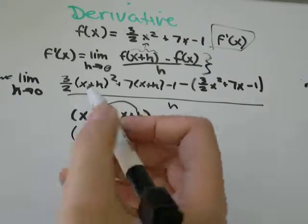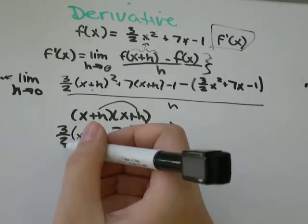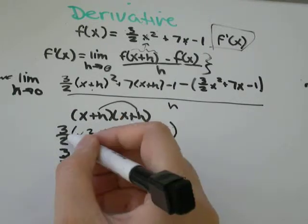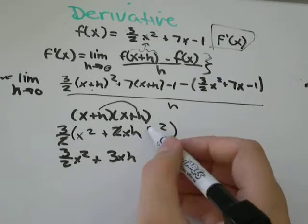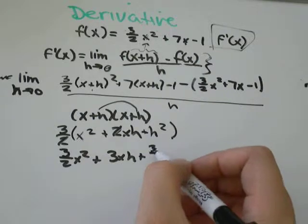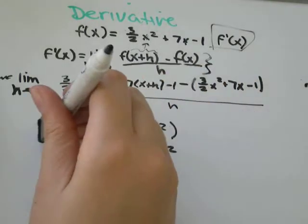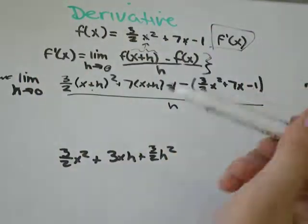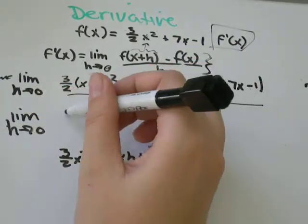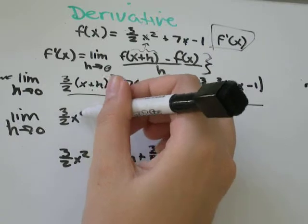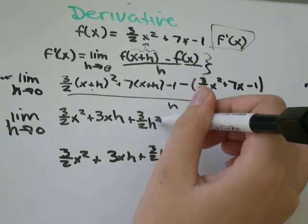And that was all being multiplied by 3 over 2. So when we multiply by 3 over 2, we'll get 3 over 2x squared, plus these twos will cancel out, and we'll be left with 3xh plus 3 over 2 h squared. Limit as h goes to 0 of 3 over 2x squared plus 3xh plus 3 over 2 h squared...